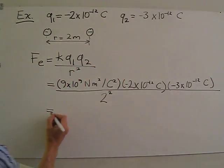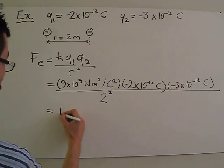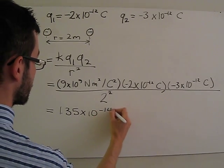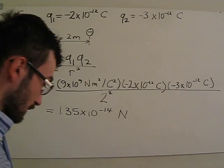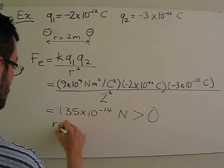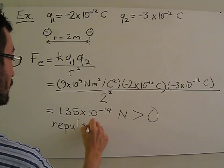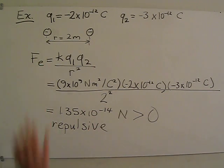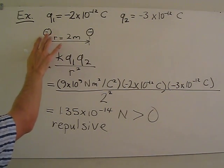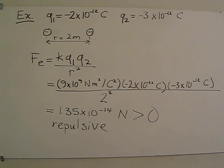After carrying out this calculation, we obtain 1.35 times 10 to the negative 14 Newtons. This quantity is greater than zero; therefore, the forces are repulsive. We can also see that the forces are repulsive because these are both negative charges, and like charges repel each other.